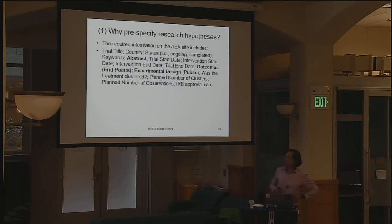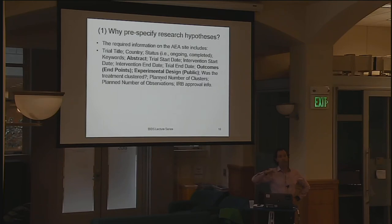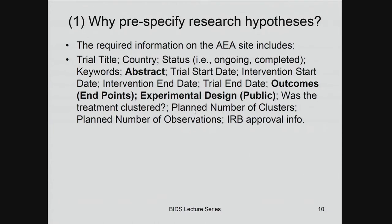The AEA registry was set up to be pretty light touch, imposing low demands on researcher time. You can basically list your main outcomes, the broad design you're going to use, the country you're working in, and a little bit on the sample. You don't need to lay out every single statistical test you plan to carry out, though there's an option to attach documents with very detailed analysis plans. The reason they did this was to make sure people weren't scared off — get everybody into the registry even at a minimal level to change the norm, and then maybe over time norms will shift towards more demanding standards. In 15 minutes you can register a study.